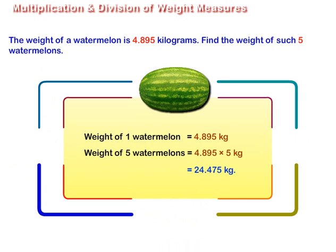The weight of a watermelon is 4.895 kilograms. Find the weight of such 5 watermelons.